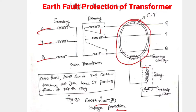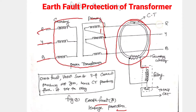The circuit involves the primary and secondary of the transformer — that is the power transformer. The secondary is connected to load, whereas the primary is connected to feeders. The primary side has high voltages.